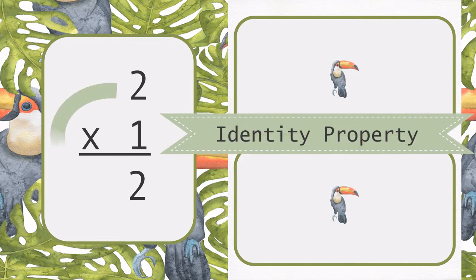The identity property states that any number multiplied by one is that number. 2 times 1 is equal to 2.